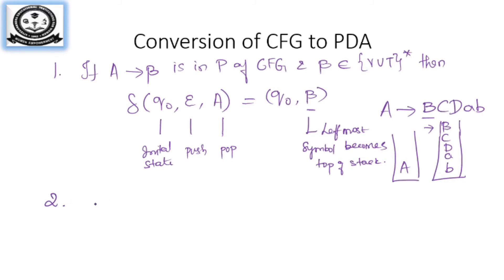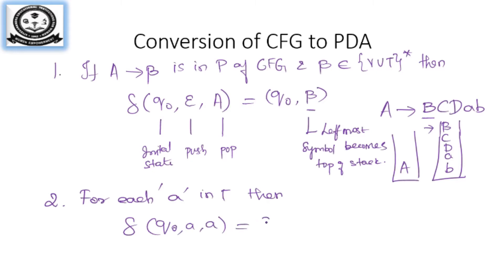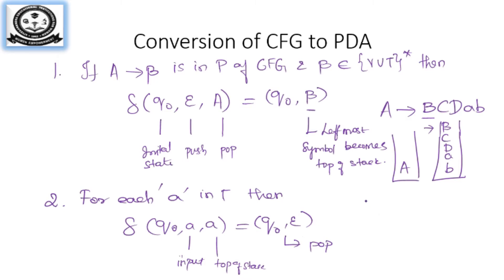The second rule: for each terminal symbol t, the transition function is τ(q0, a, a) = (q0, ε), which performs a pop operation. The current input is terminal a and the top of the stack is also terminal symbol a, so you perform a pop. For example, if A → ab and your stack contains a, this a and the input a will get popped. Using these two rules you form a transition function such that the string will be accepted using empty stack.